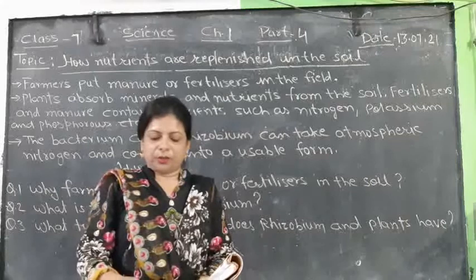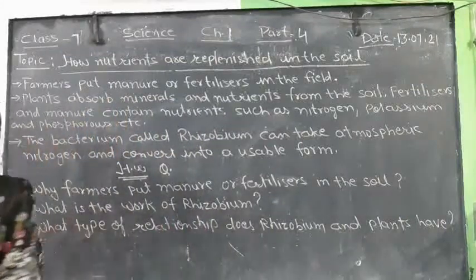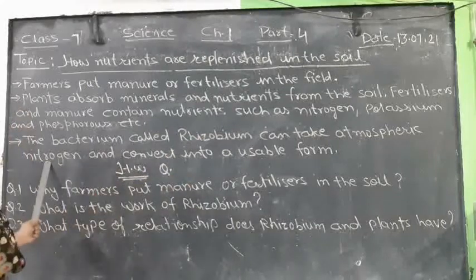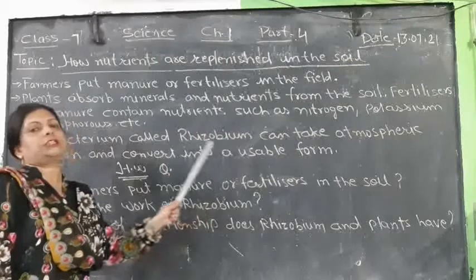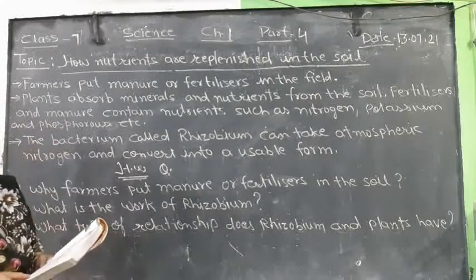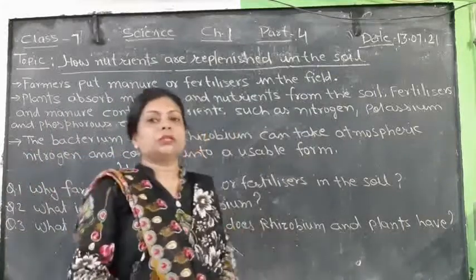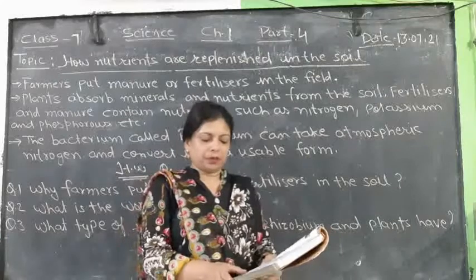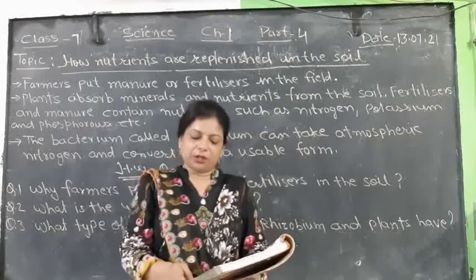The bacterium called Rhizobium can take atmospheric nitrogen and convert it into a usable form. Rhizobium cannot make its own food because it has no chlorophyll. So it lives in the roots of leguminous plants like gram, peas, and mung, and provides them with usable nitrogen.